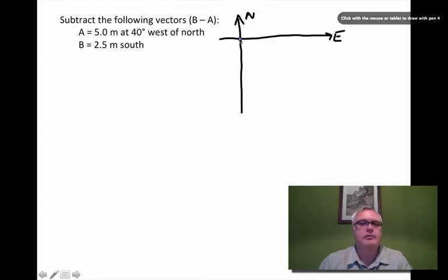And I want to start with my vector B. That's the first vector that I want to deal with. I want to go B plus negative A. So vector B is a vector 2.5 meters in length. And it points south. So let me try and make this a little bit thicker. So this is 2.5 meters south.